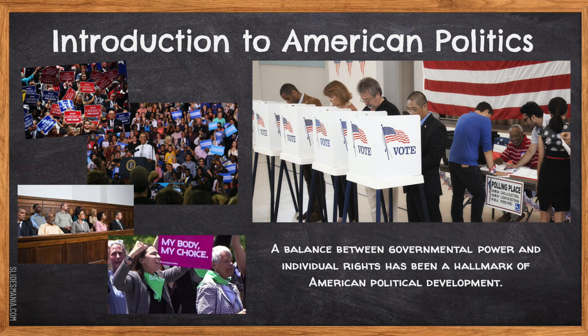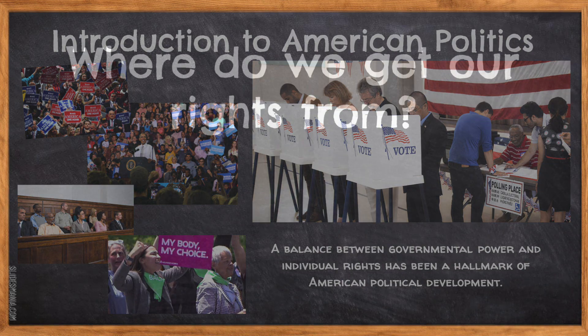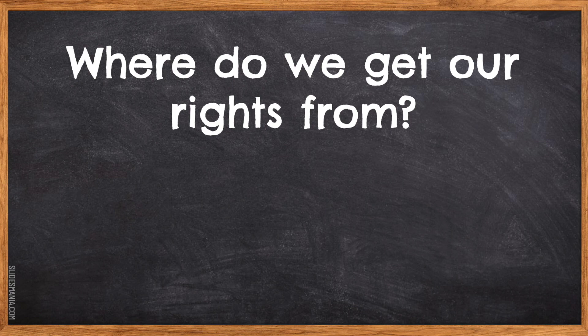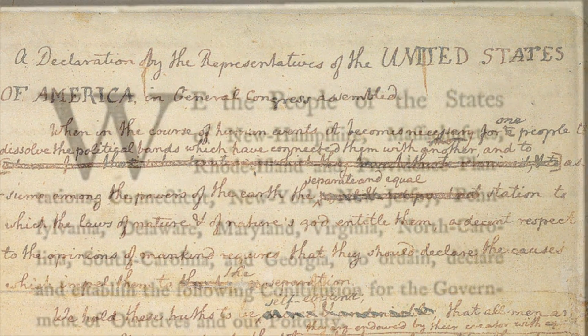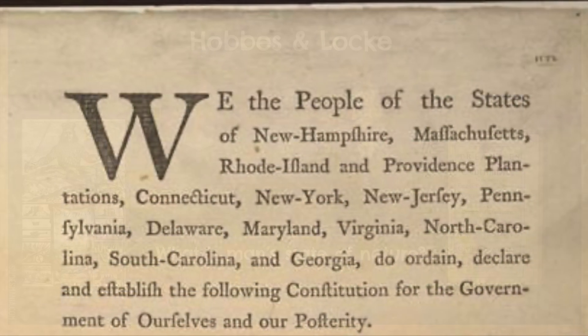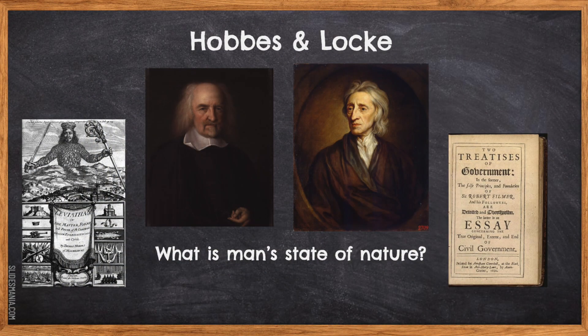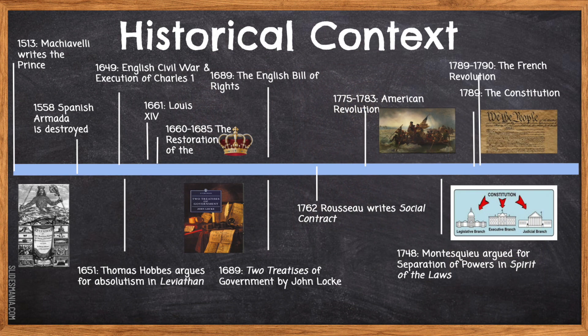But before we do anything else, we have to ask ourselves: where do we get our rights from? The rights that Thomas Jefferson wrote about in 1776, and the rights that were codified into our American Constitution in 1789. And if you remember from your World Cultures class, the two British philosophers Thomas Hobbes and John Locke wrote competing theories on man's state of nature. They were two of the most important political philosophers of the 18th century that saw governments go from an absolute monarch to limited monarchies, or in the case of the United States, a republic.